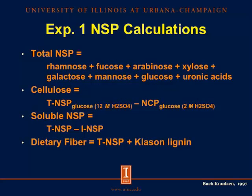Some calculations you can make: total NSP equals the sum of all the sugars; cellulose equals the total NSP glucose hydrolyzed with 12 molar sulfuric acid minus the glucose from the NCP procedure hydrolyzed with 2 molar sulfuric acid; soluble NSP equals total NSP minus insoluble NSP; and dietary fiber equals total NSP plus Klason lignin.